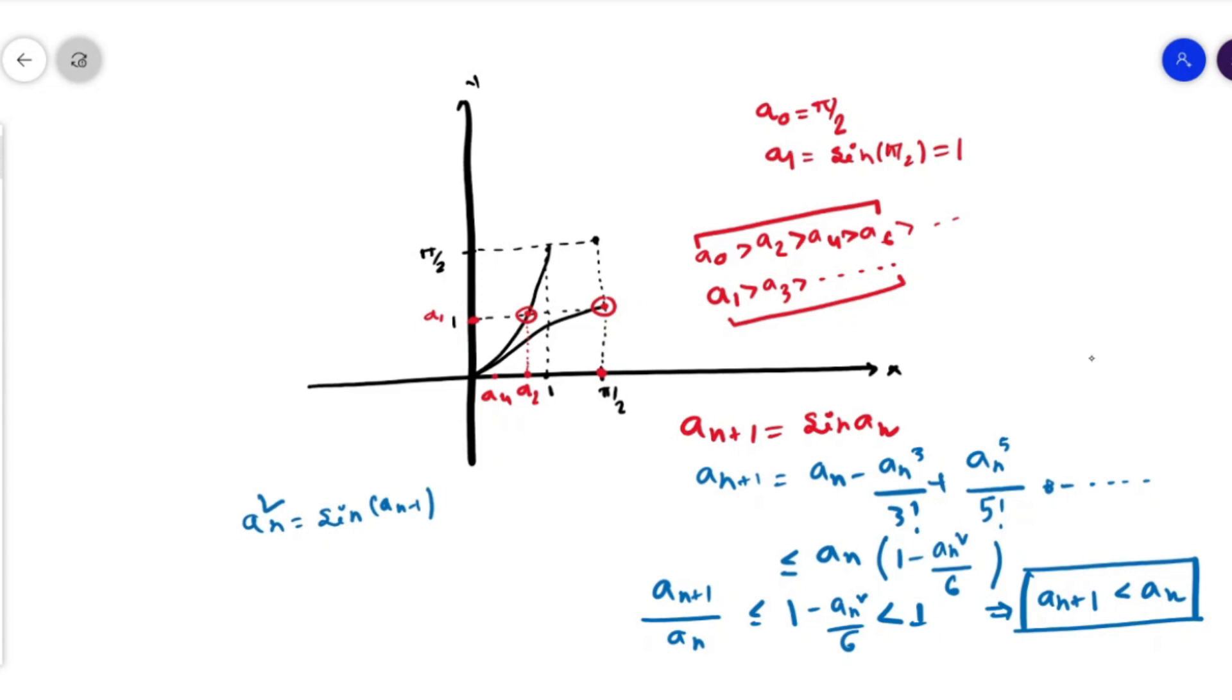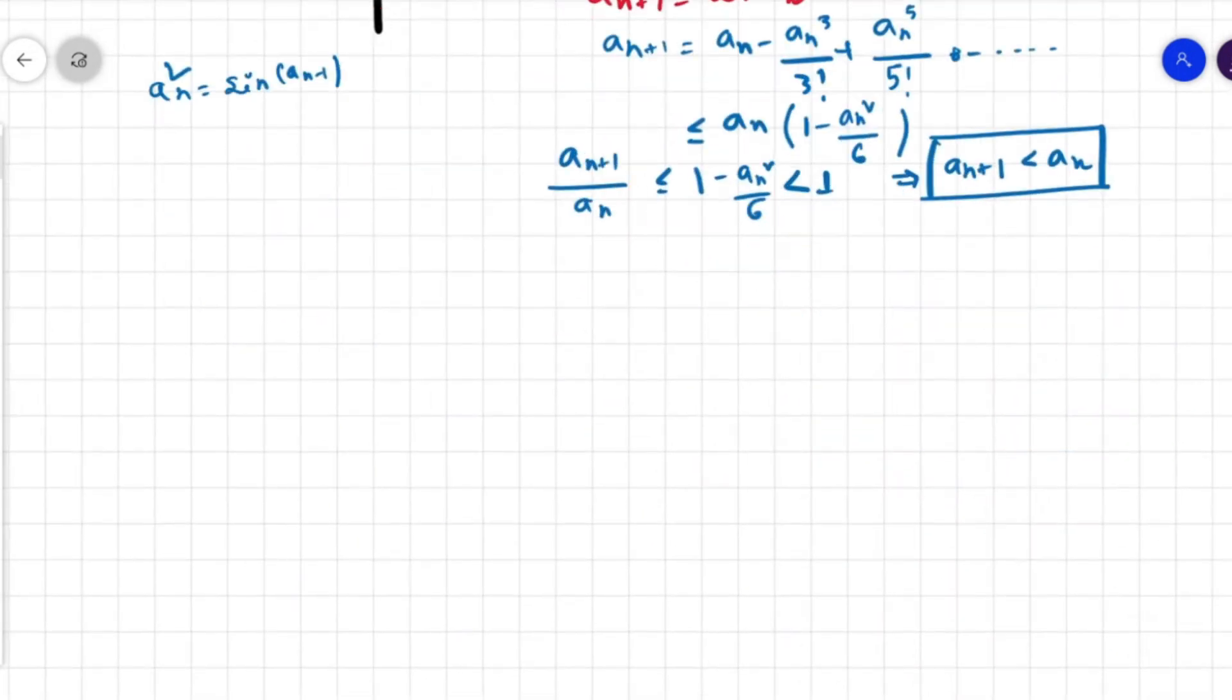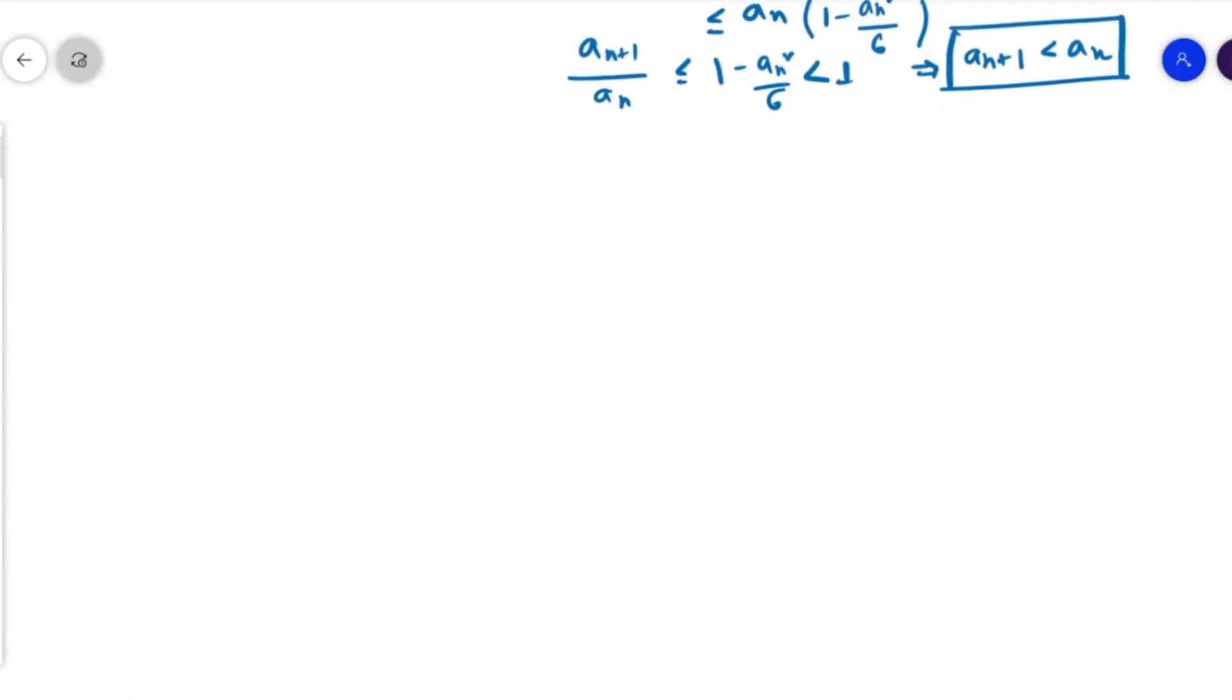If you recall the harmonic series, let me write here that H_n = 1 + 1/2 + 1/3 + ... + 1/n, and the limit as n tends to infinity of H_n diverges.